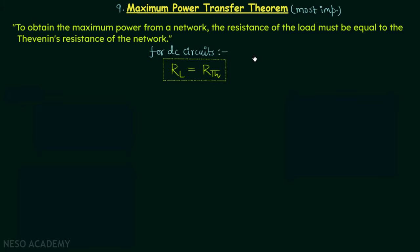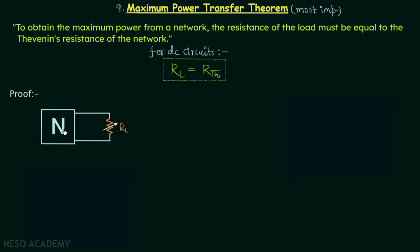In the coming lectures we will understand the Maximum Power Transfer Theorem for AC circuits. Now we will move on to the proof of the Maximum Power Transfer Theorem. We have a network N, and to this network we have connected load resistance RL. We just saw that to have the maximum power from this network, RL should be equal to the Thevenin's resistance of this network.